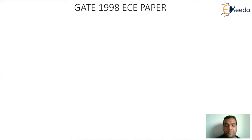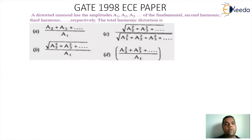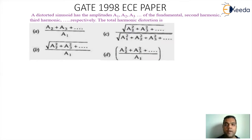This is from the GATE 1998 ECE paper. The question is: a distorted sinusoid has amplitudes A1, A2, A3 of the fundamental, second harmonic, and third harmonic respectively. The total harmonic distortion is — with options A, B, C, and D given.